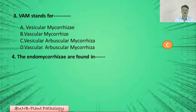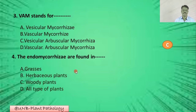Question number four: Endomycorrhizae are found in — A: grasses; B: herbaceous plants; C: woody plants; D: all of the above. The correct answer is D: all of the above — meaning grasses, herbaceous plants, woody plants, and all plants are associated with endomycorrhizae.